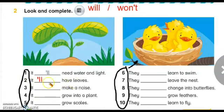Number three: It make a noise. Look at this picture. Will it make a noise? No, it won't make a noise. So here we have to use won't about this plant. Number four: It grow into a plant. Excellent, so here we have to use will. It'll grow into a plant.